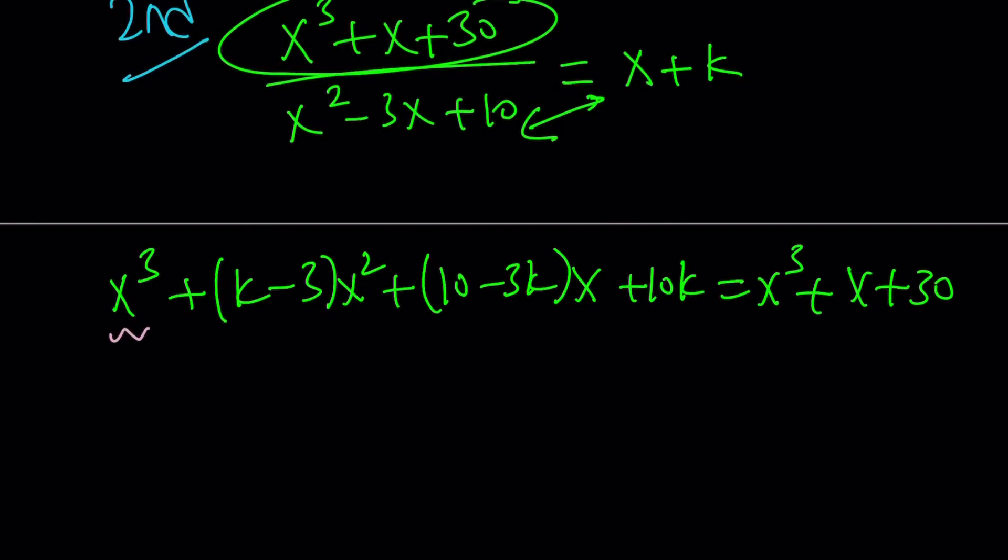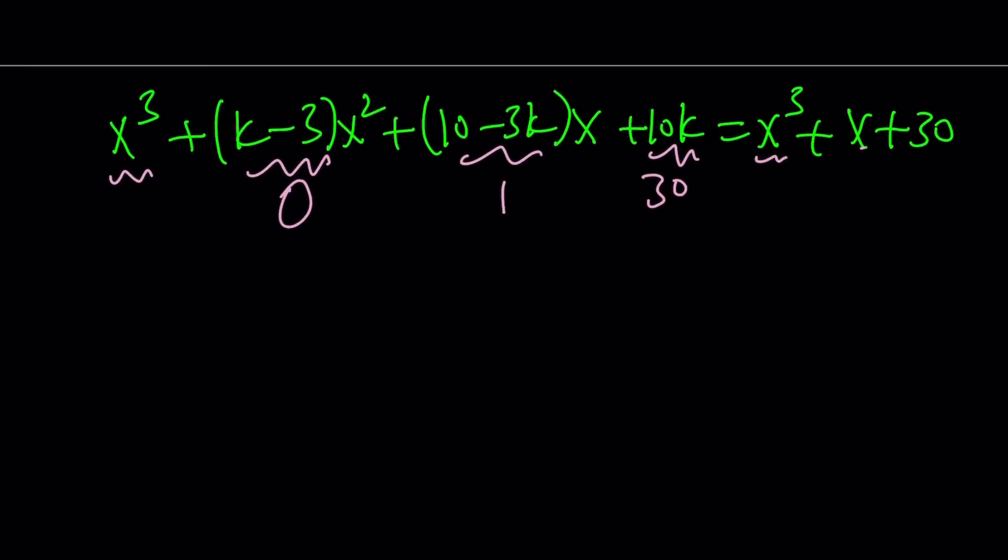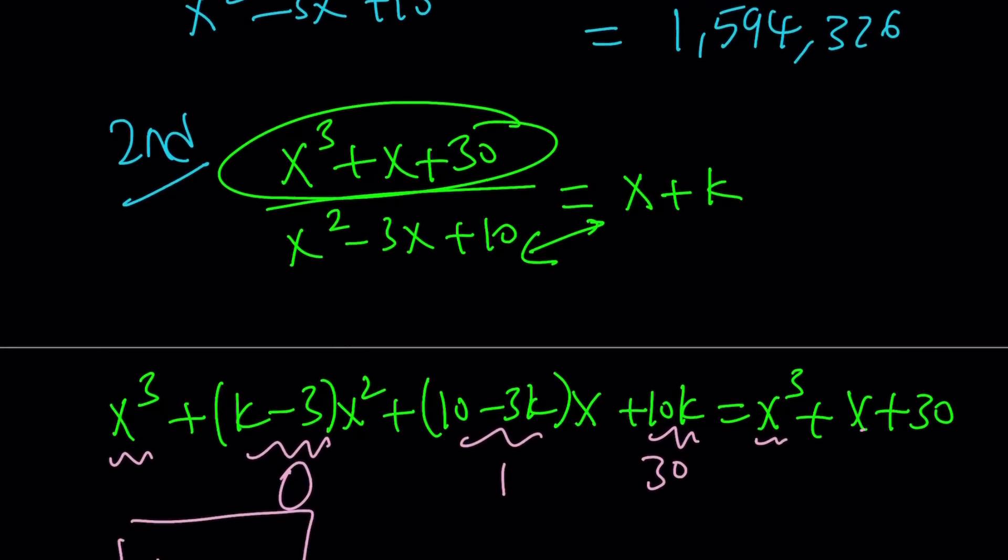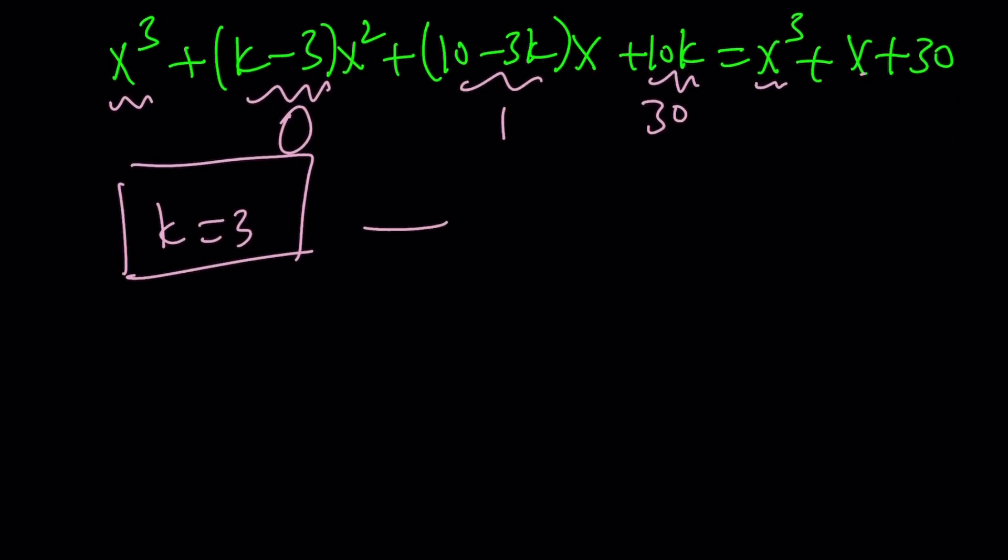Now take a look at this. x cubed equals x cubed. That's good. There's an x squared here, but there's no x squared here, so this is supposed to be 0. The coefficient of x is 1. The coefficient of x must be 1. The constant is 30. The constant must be 30. We get three equations, but they're all for the same variable. They should all agree. Otherwise, these polynomials are not divisible. So, k equals 3 is verified three times, so k equals 3. But remember, the quotient was x plus k, therefore it is x plus 3. As before, it is 3 to the power of 13 plus 3.